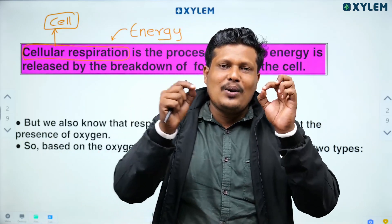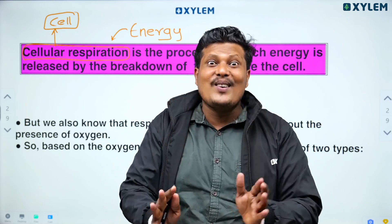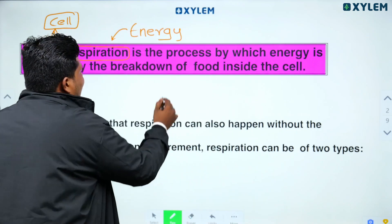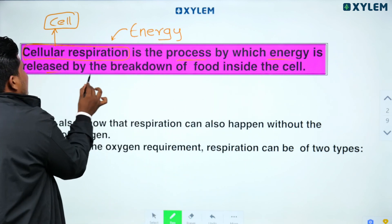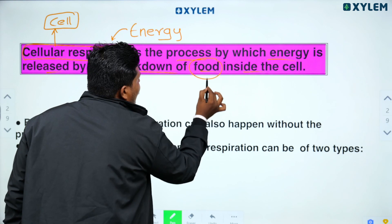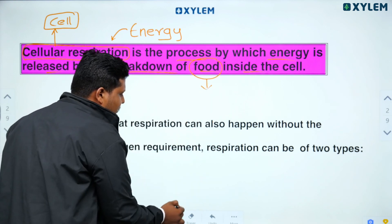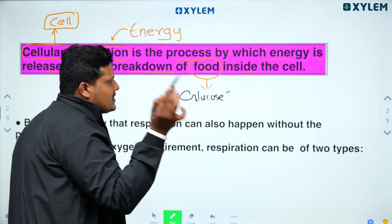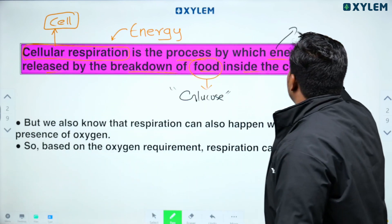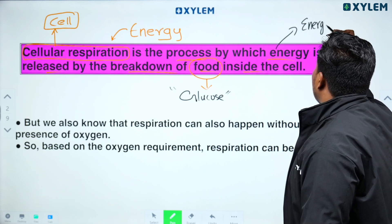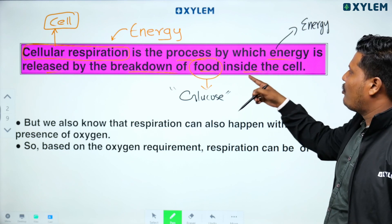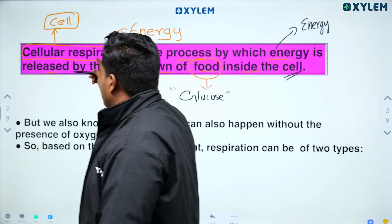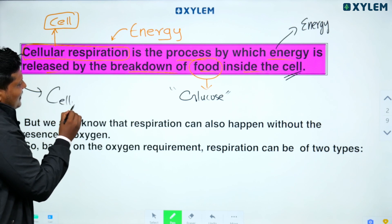Food is broken down in the form of glucose. Cellular respiration is a process by which energy is released by the breakdown of food inside the cell. Food breakdown is the same as glucose breakdown, which releases energy.